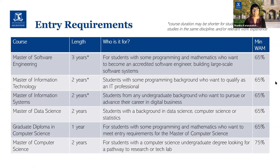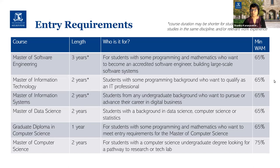Regarding entry requirements: even if you're not doing an IT degree, if you have done two programming subjects and two mathematics subjects, you qualify for a three-year Master of Software Engineering. If you've completed our major, it reduces to two years. For the Master of Information Technology, requirements are less stringent — you need only some programming background, no mathematics required, and it's a two-year degree, or one and a half years if you've completed our major. The Master of Information Systems has similar requirements. The Master of Computer Science requires completion of our major and is a two-year degree. All courses have WAM requirements, so make sure you're focused on achieving the right WAM.